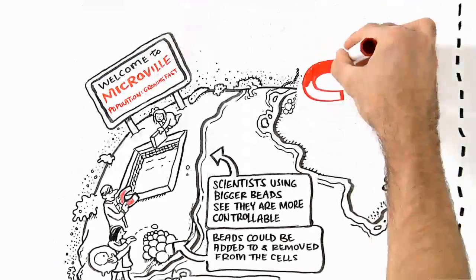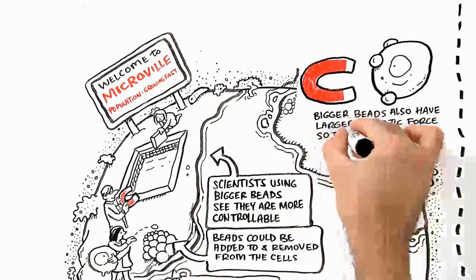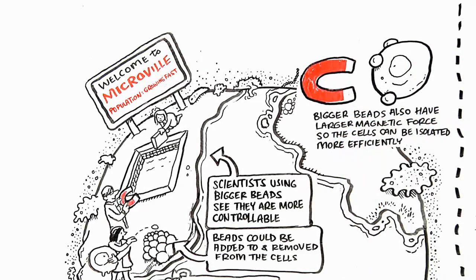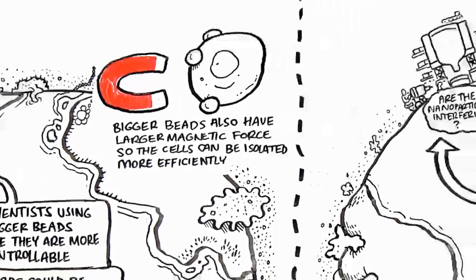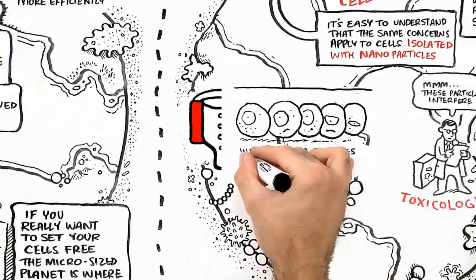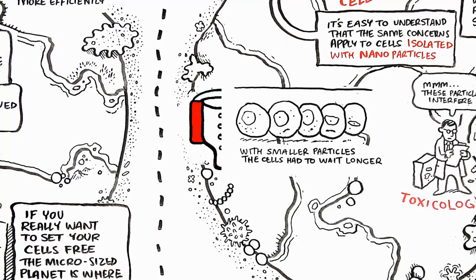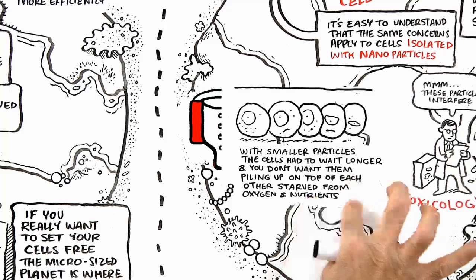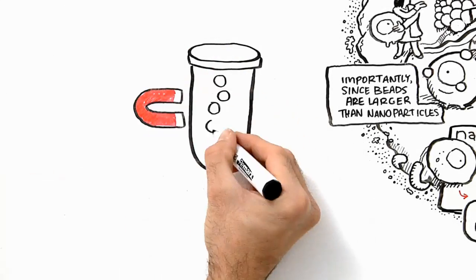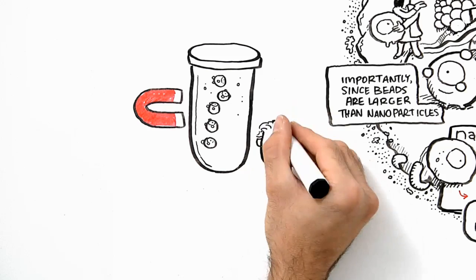The bigger beads also have larger magnetic force, so the cells can be isolated more efficiently. Dr. Fossman's team from Harvard found that with smaller particles, the cells had to wait longer. And you don't really want them piling up on top of each other, getting starved from oxygen and nutrients. So she noticed a big improvement in the yield of cells when using microsize beads as opposed to nanosize particles.